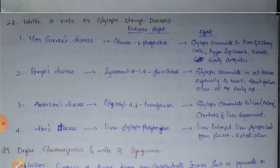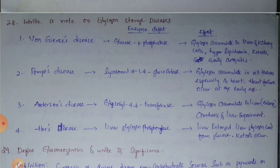Write a note on glycogen storage diseases. These diseases occur due to the storage of glycogen in the liver. First is Von Gierke's disease, due to deficiency of glucose-6-phosphatase enzyme. Effects include glycogen accumulation in liver and kidney cells, hyperlipidemia, ketosis, and gouty arthritis.